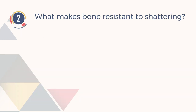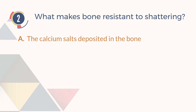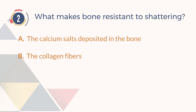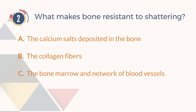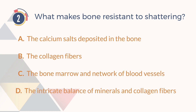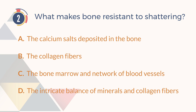Number 2. What makes bone resistant to shattering? A. The calcium salts deposited in the bone. B. The collagen fibers. C. The bone marrow and network of blood vessels. D. The intricate balance of minerals and collagen fibers.